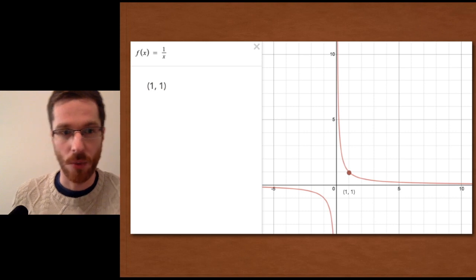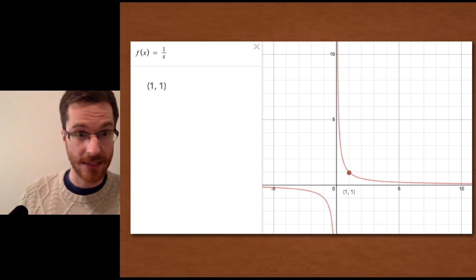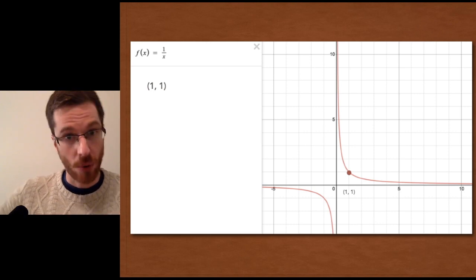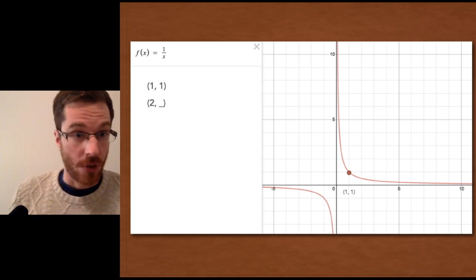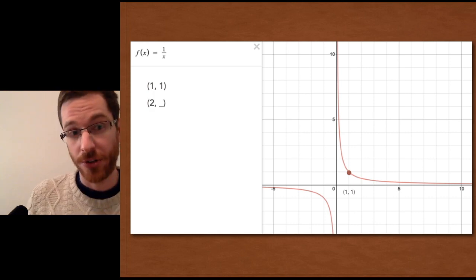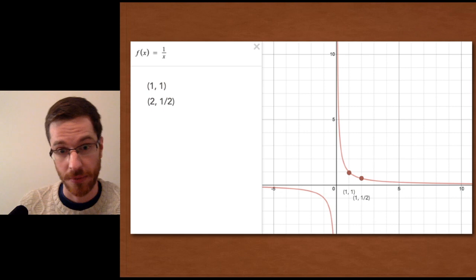One over x. So whatever x is, the function is outputting one over x. So if it's two, if we put two into the function, we get one over two. And you can see where the next point is.